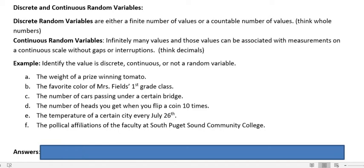Discrete random variables are either a finite number of values or a countable number of values like whole numbers. If you wanted to count the number of people in your immediate family or something that you want to count, we're talking about discrete.